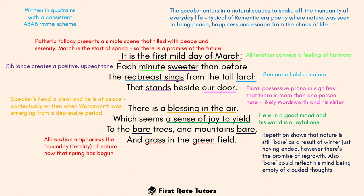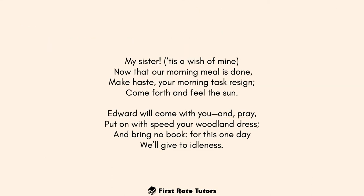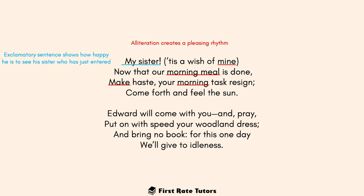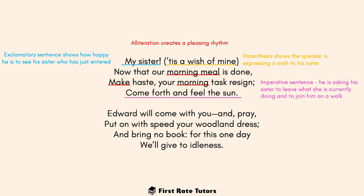The alliteration of 'G' in 'grass' and 'green' emphasizes the fecundity — meaning fertility — of nature now that spring has begun. In the third verse, the alliteration of 'M' in 'my sister,' 'mine,' 'morning meal,' 'make haste,' and 'morning' creates a pleasing rhythm. The exclamatory 'my sister' shows how happy the speaker is to see her. He then speaks in parenthesis — 'tis a wish of mine' — showing his desire, followed by the imperative 'come forth, feel the sun,' asking his sister to leave her tasks and join him for a walk.